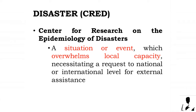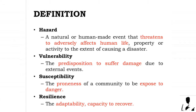According to the Center for Research on the Epidemiology of Disasters, a disaster is a situation or event which overwhelms local capacity, necessitating a request to national or international level for external assistance. Hazard is defined as a natural or human-made event that threatens to adversely affect human life, property, or activity to the extent of causing a disaster. Vulnerability is the predisposition to suffer damage due to external events.